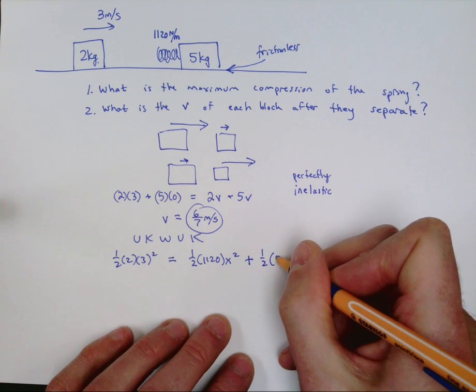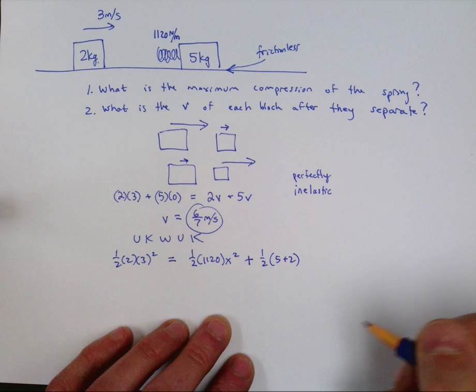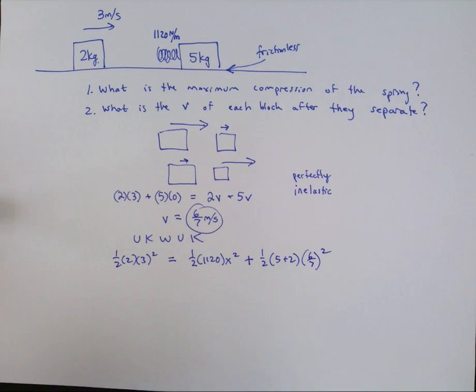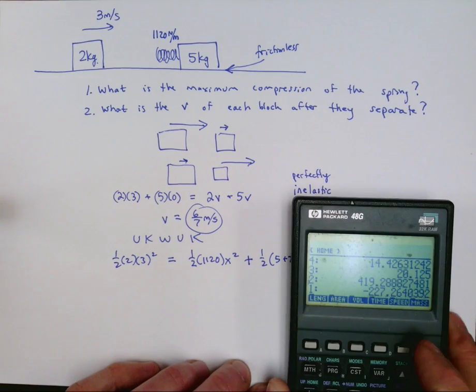So I'm going to do one half times five plus two, because they're together with the same speed, times six sevenths squared. And that's the formula that I have to solve for x. And let me do that and find out what the answer is.